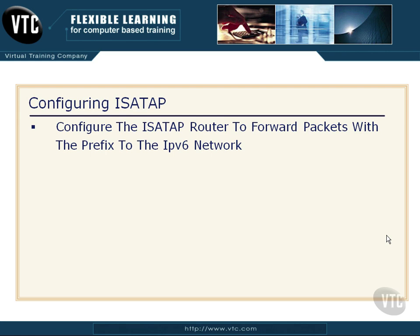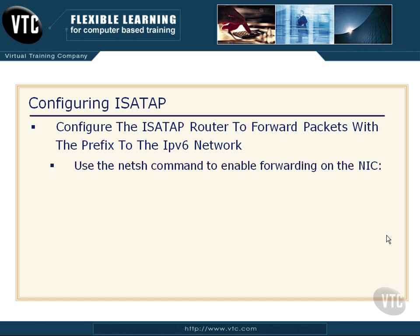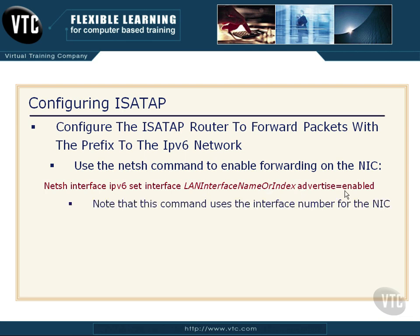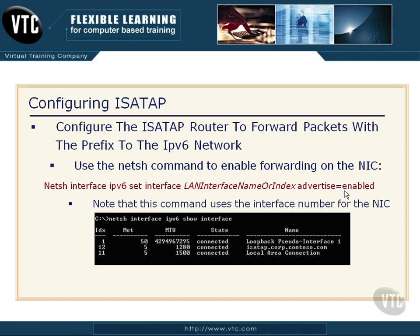Then I will configure the router to forward packets. I've told it to advertise itself and provided the prefix. Now I've got to tell the router to forward packets with that prefix to the IPv6 network. I'll use the netsh command to enable forwarding on the NIC — the network interface card in the machine, not the tunneling adapter. I'll call net sh interface, set interface with the LAN interface name or index, and advertise equals enabled. The interface number for the NIC is 11, so: net sh interface IPv6 interface 11, forwarding is enabled.